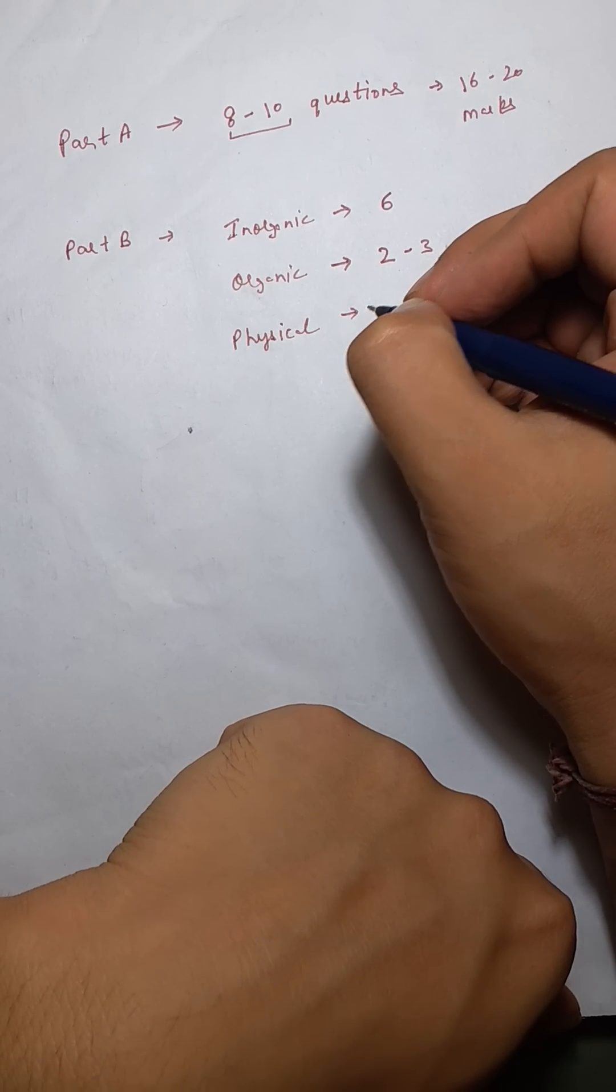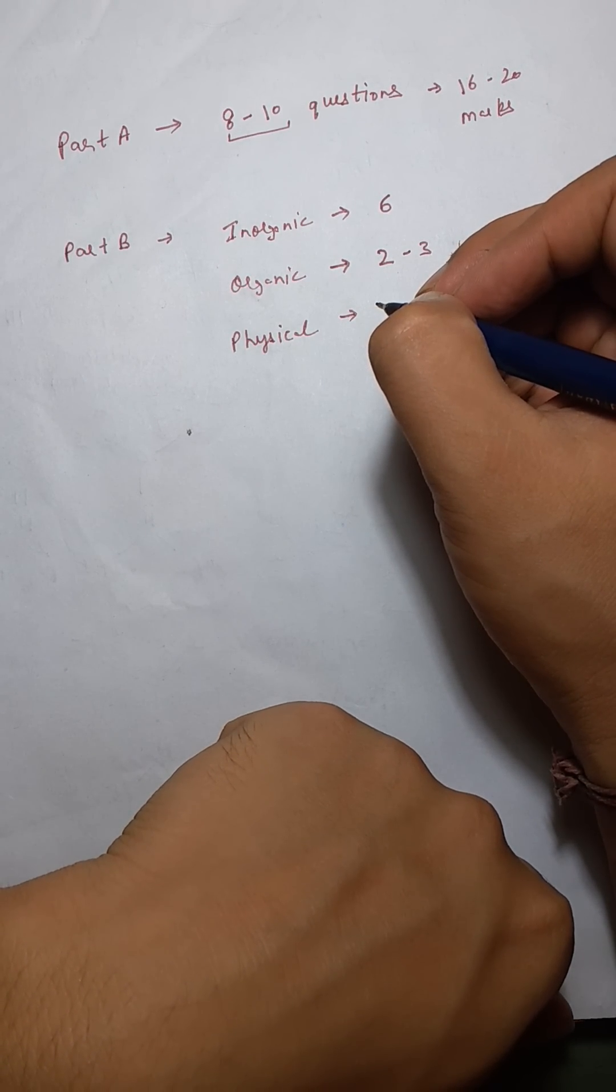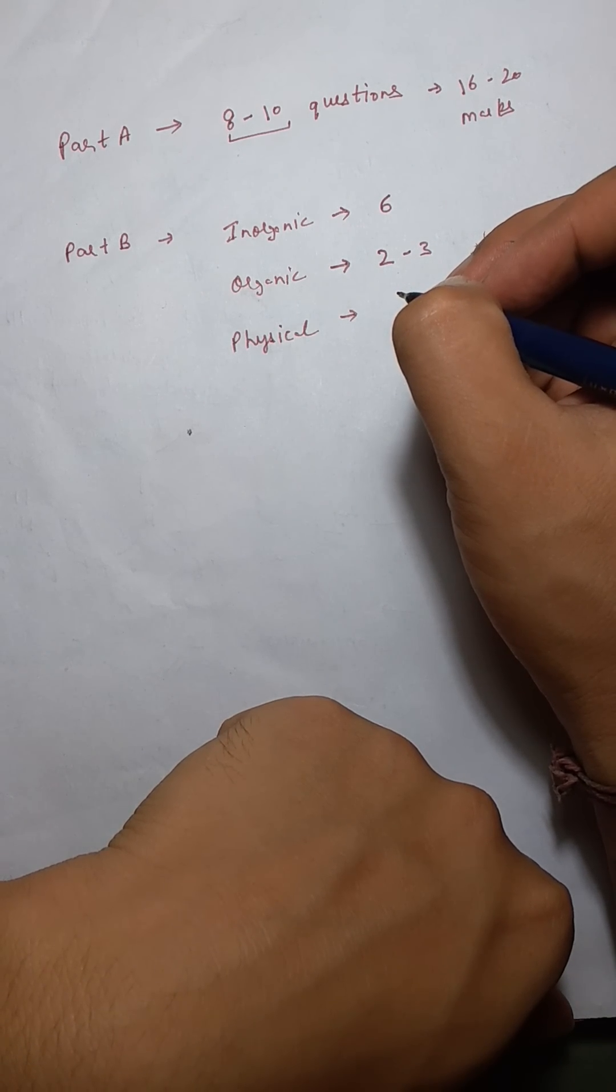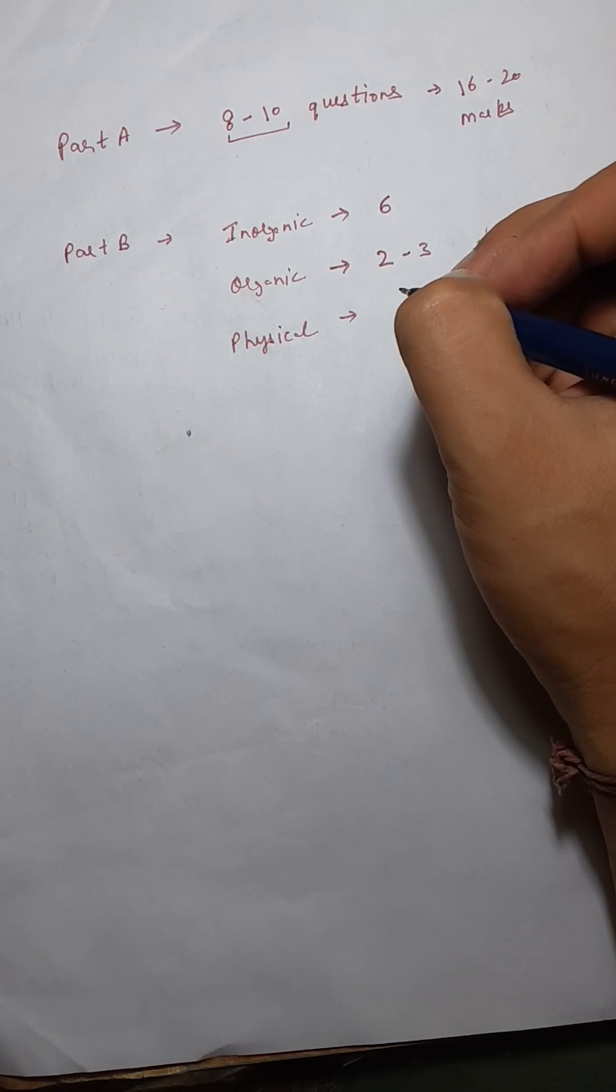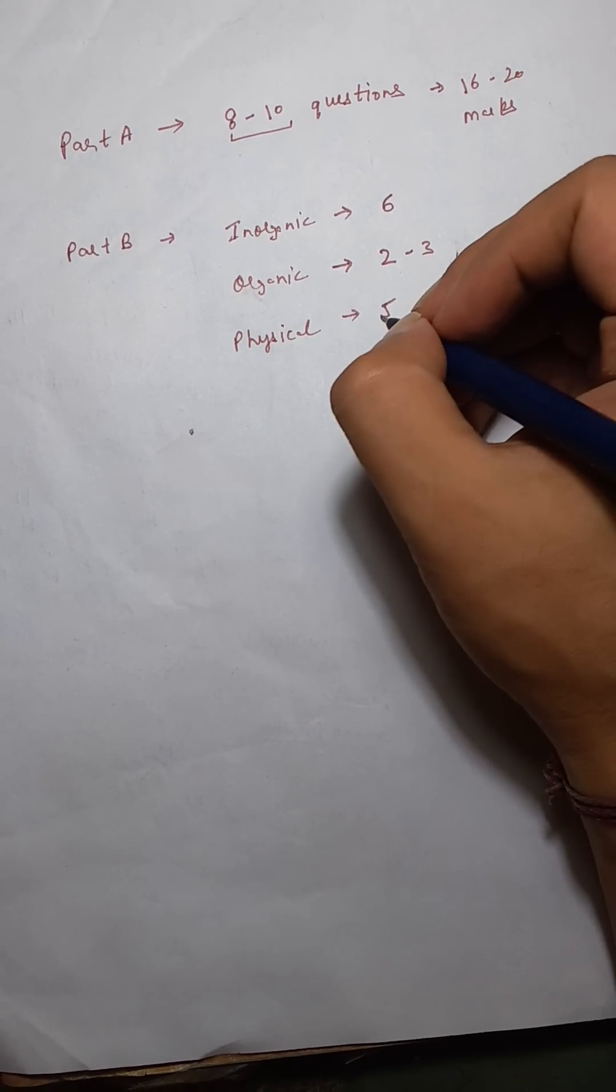The physical portion again was very easy. We had question on the eigenfunction for a particular operator. That was a pretty easy question. Then we had question on electrochemistry. That was a little tricky so I won't count that because not every aspirant could have got that question correct. Then we had one question on polydispersity index which was quite easy as well. Then there was one question or direct question on Bragg's law. And then there was one question on Arrhenius equation where we needed to predict the pre-exponential factor. That was a very easy question. And there was one question on thermodynamics which is pretty easy. So let's say we could have attempted five questions in physical.